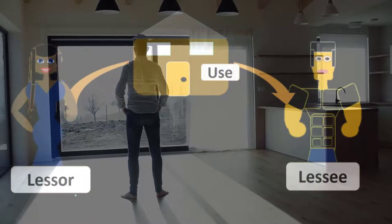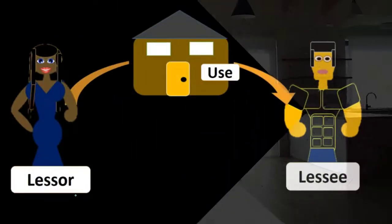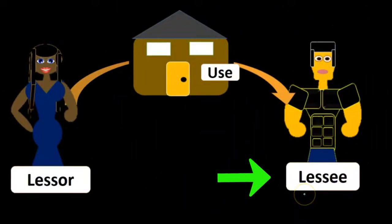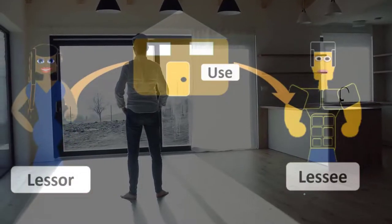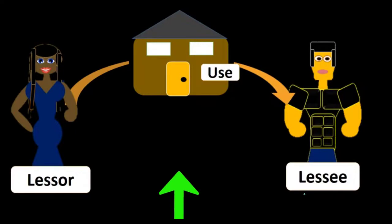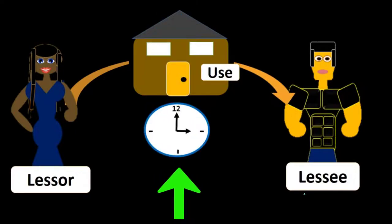The lessee is the person that will be using the property. However, they do not have ownership ultimately of the property over the time of use.